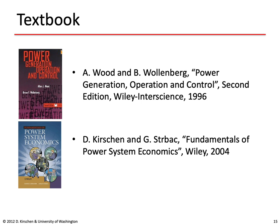There are two textbooks I recommend for this class. The first is Power Generation, Operation and Control by Al Wood and Bruce Wallenberg, which has very good coverage of traditional power system economic problems such as economic dispatch, unit commitment, and optimal power flow. For the second part of the course, I recommend a book I wrote entitled Fundamentals of Power System Economics, which looks at power system economics in the context of competitive electricity markets.